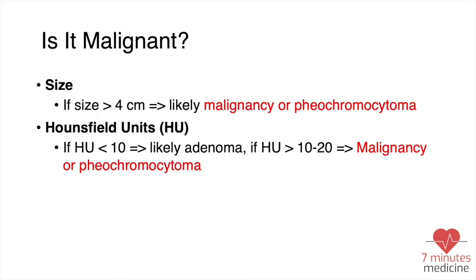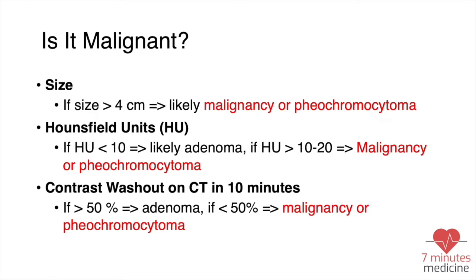If the Hounsfield units are more than 10 or 20, this goes more with malignancy or pheochromocytoma. The third factor is the contrast washout of the CT scan at 10 minutes — this is the washout of the contrast material from the mass after 10 minutes. If it's fast, this is more benign. So if there is more than 50% washout after 10 minutes, this goes with adenoma. If less than 50%, this goes more with malignancy or pheochromocytoma.